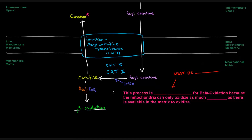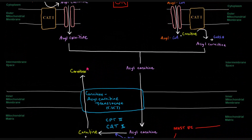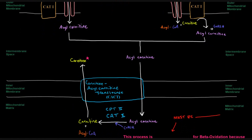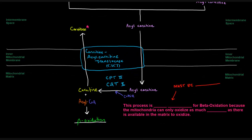Once acyl-CoA and carnitine are regenerated, the acyl-CoA goes to beta-oxidation while the carnitine is translocated back across into the intermembrane space. Depending on the scenario, it either joins another acyl-CoA in the intermembrane space or goes back out into the cytoplasm to join another acyl-CoA, forming another acyl carnitine to repeat the cycle. The translocase name makes sense — carnitine acyl carnitine translocase — because it translocates both molecules: bringing acyl carnitine in and kicking carnitine back out.